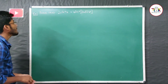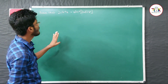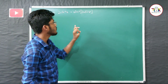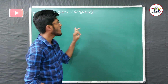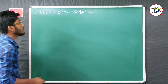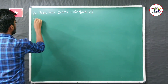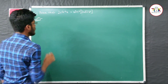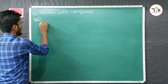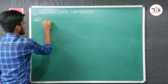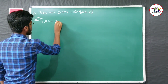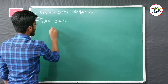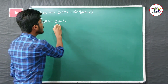The first question asks us to prove that 2·sin⁻¹(x) is equal to sin⁻¹(2x√(1-x²)). This is quite a simple question. For the solution, we start with the LHS, which is 2·sin⁻¹(x).